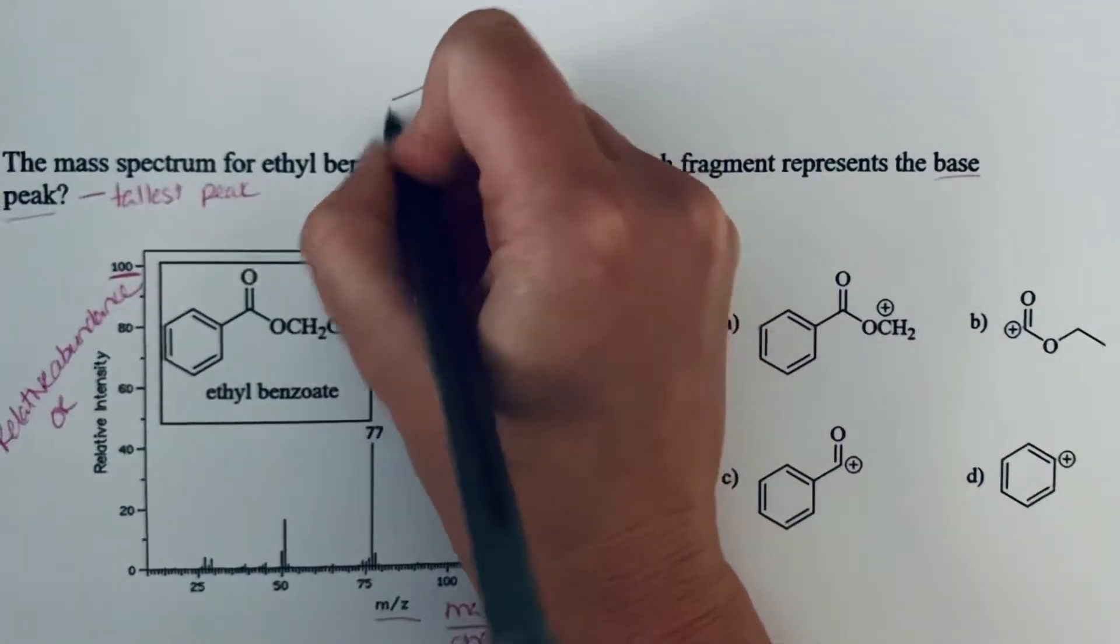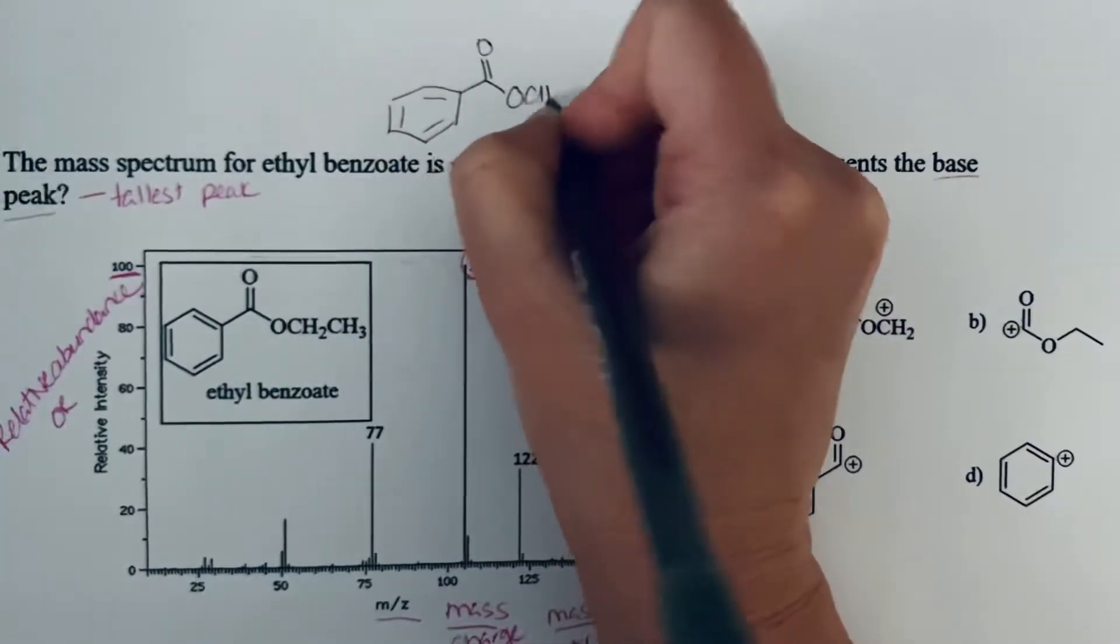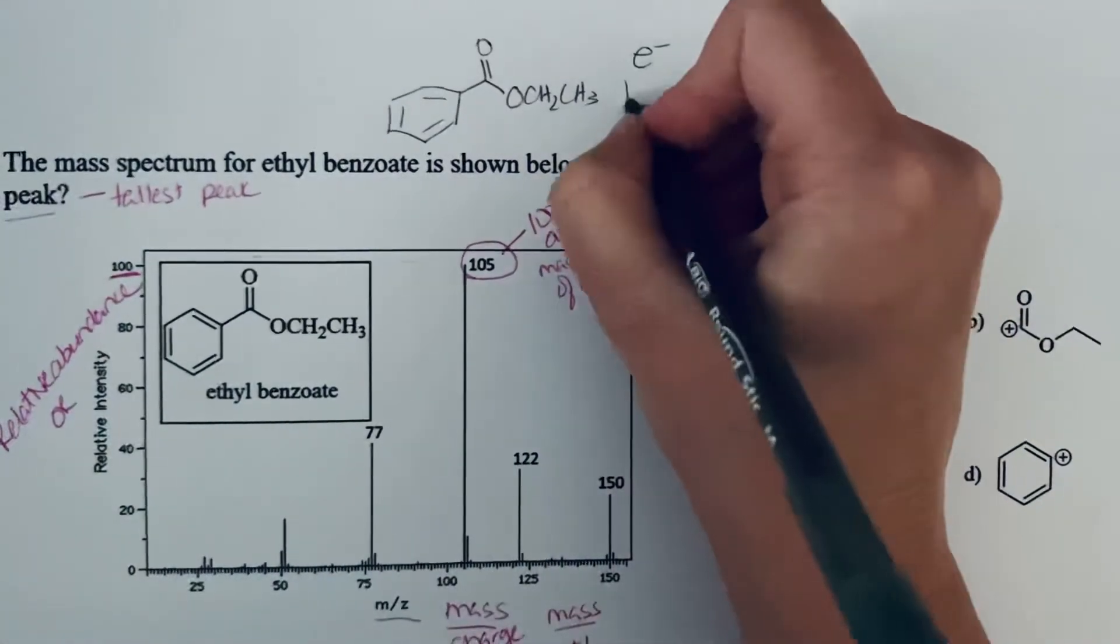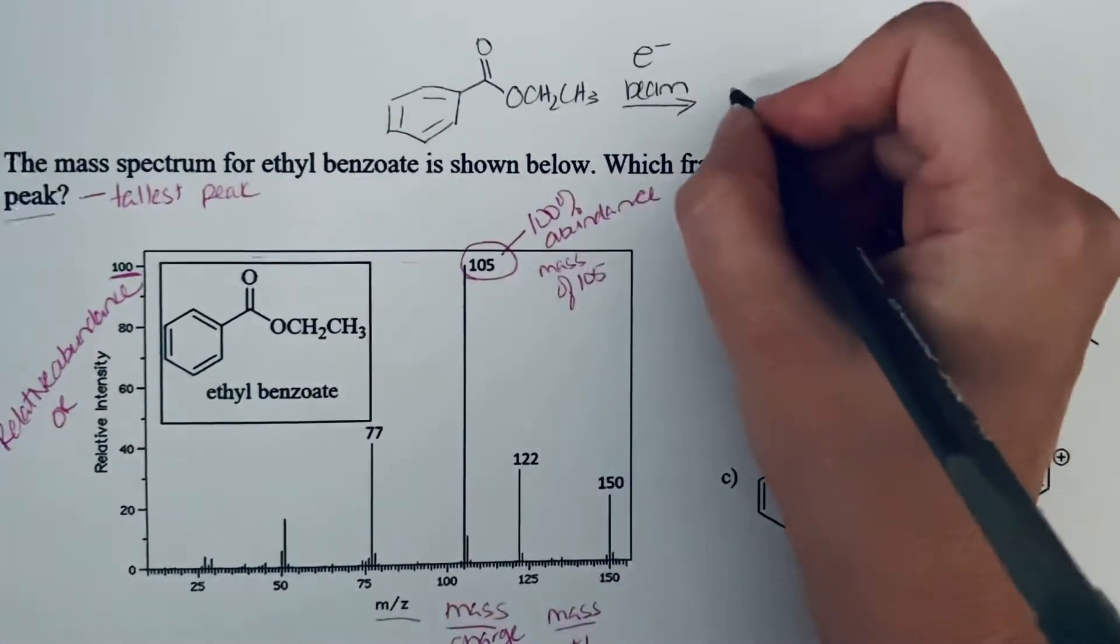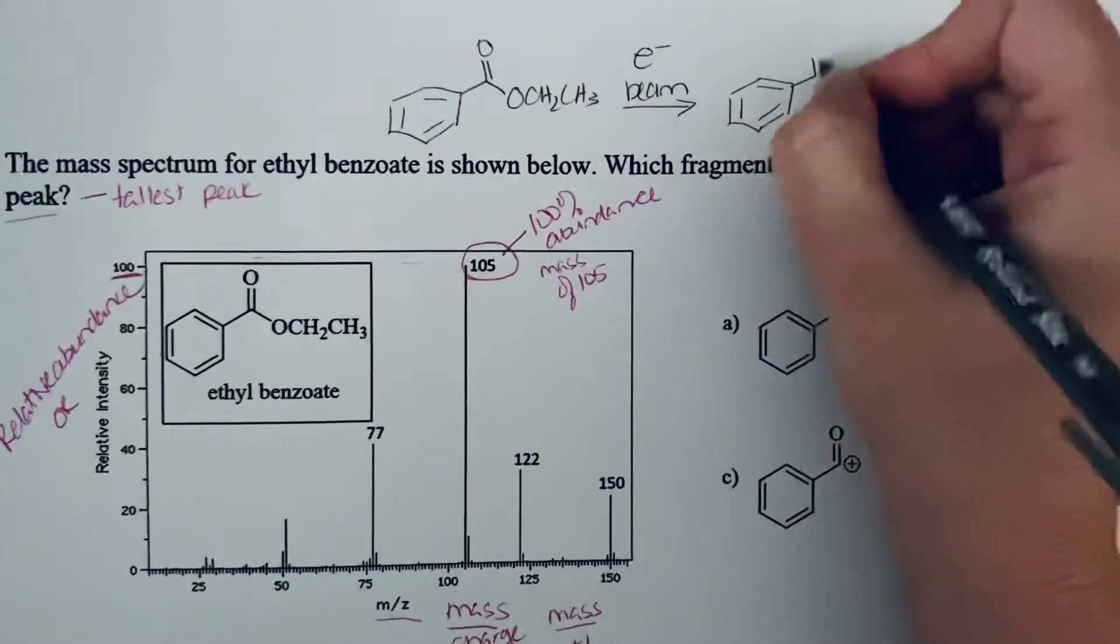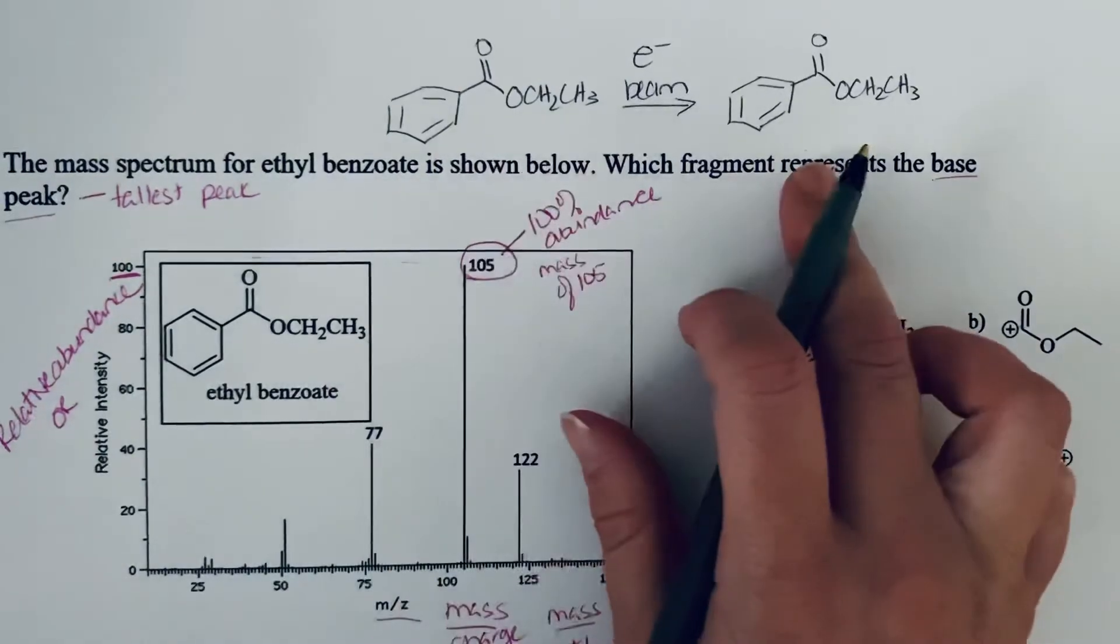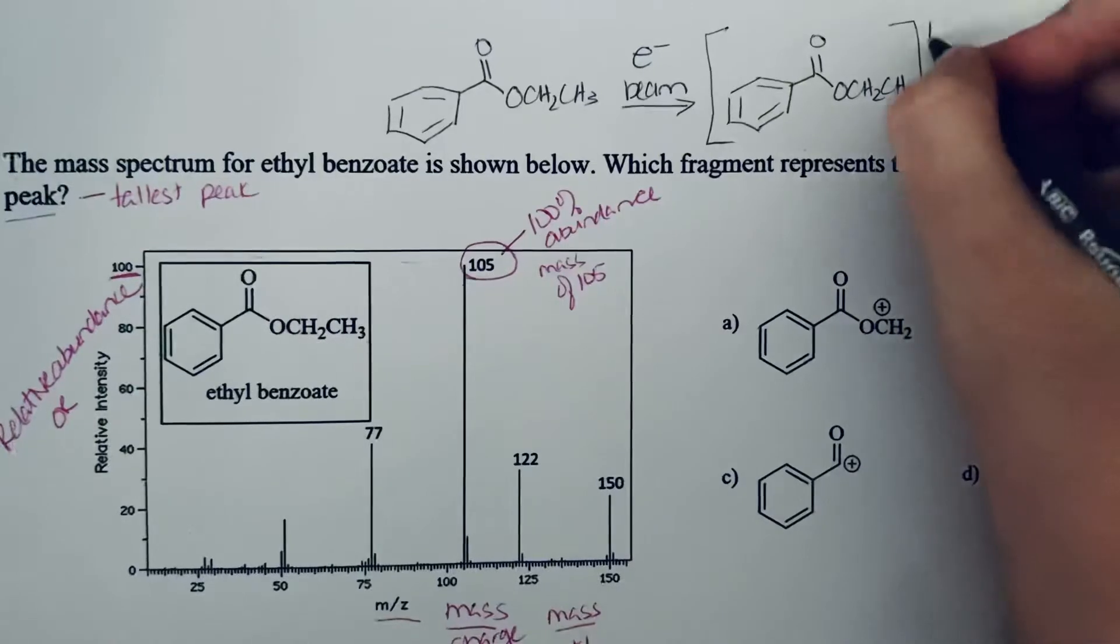We've got our ethylbenzoate, which is what we're starting with. When you take this ethylbenzoate, you put it into the mass spectrometer, it's going to be hit by a high energy beam of electrons. What that will do is it's going to knock one electron off of the ethylbenzoate. That means you're going to have the whole molecule, you haven't lost any atoms, but you have lost an electron, which means it's going to go from being neutral to being positive, and you're going to have one electron that's left unpaired.